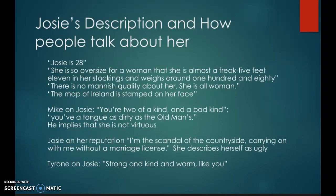But if you think back to all those images we just looked at of all the women who have played Josie, not all of them match O'Neill's description. Then there's what the other characters say. Mike on Josie: 'You're two of a kind and a bad kind. You've a tongue as dirty as the old man's.' So her brother implies that she is not virtuous — he buys into everything Josie says about herself. And Josie, on her reputation, says, 'I'm the scandal of the countryside, carrying on without a marriage license.' She describes herself often as ugly, so she doesn't think of herself as a beautiful person. And yet her actions tell us the opposite of that, and so we have this contradiction, because in realism these characters are often incredibly complex.